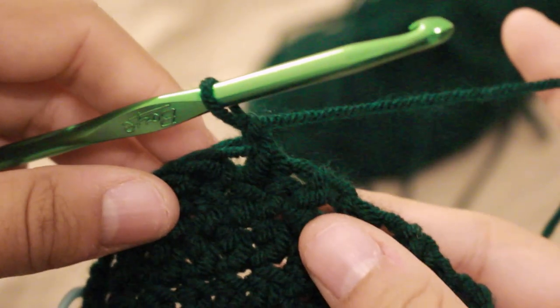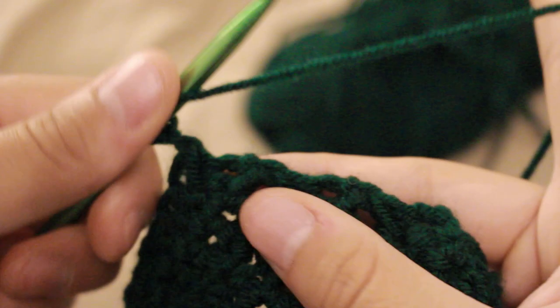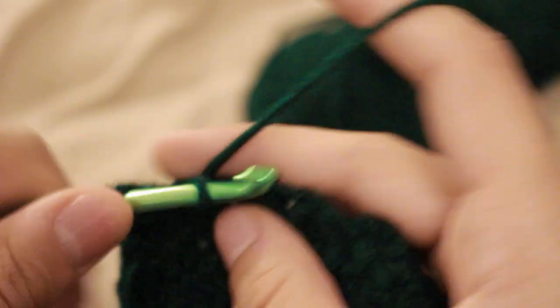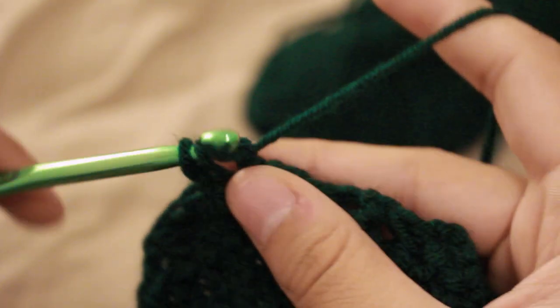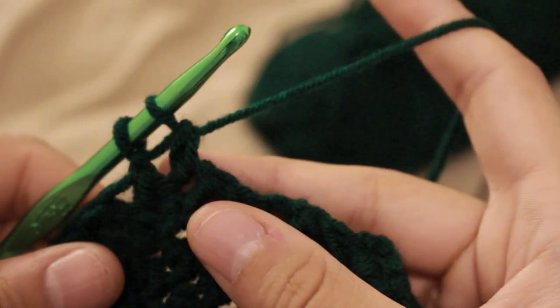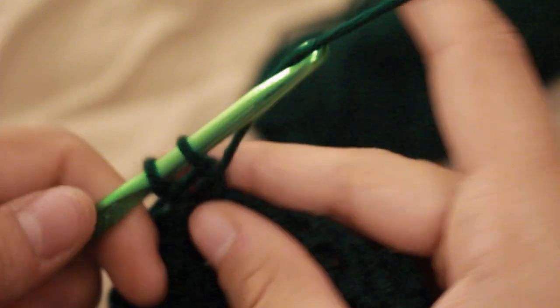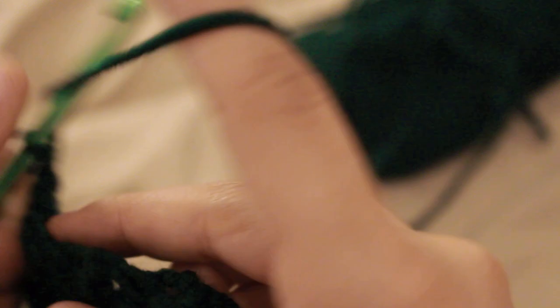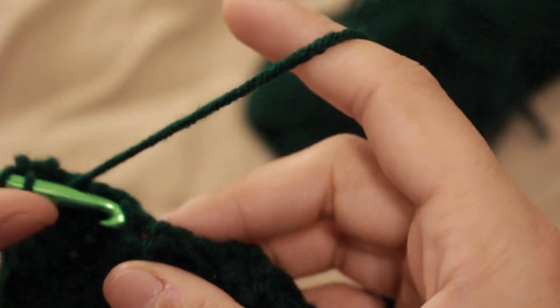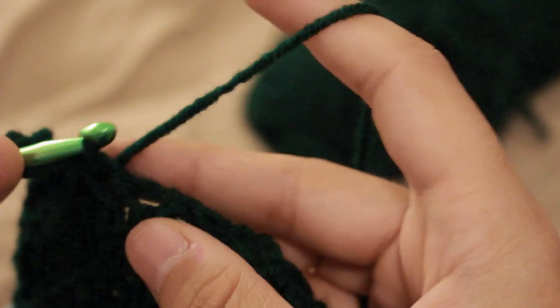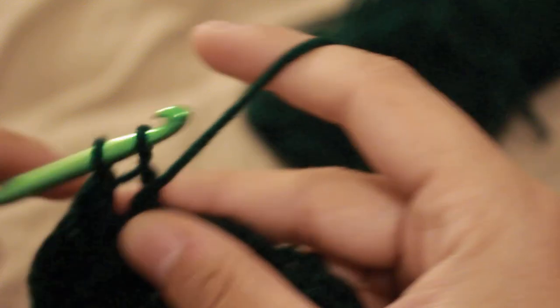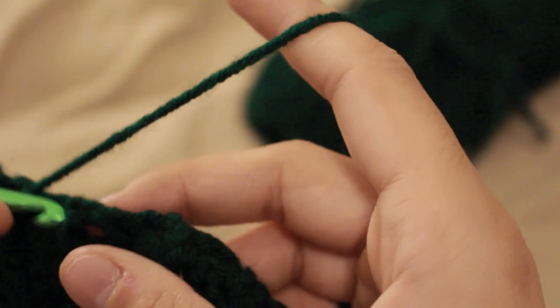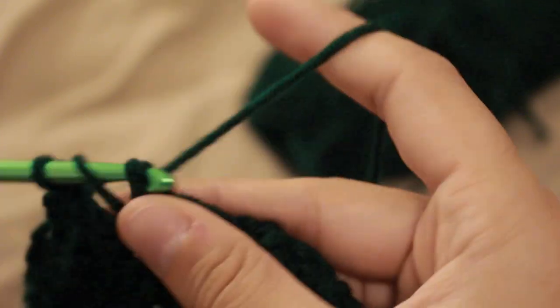At the end of row 34, you're going to chain one, and then you're going to want to turn slightly so that you're at the edge of the work. This is how we're going to do the outer edge. We won't be doing half double crochets anymore, we'll just be doing straight double crochets. You'll want to do this into any of the spaces that you see on the outer edge because there's no defined stitch spaces.